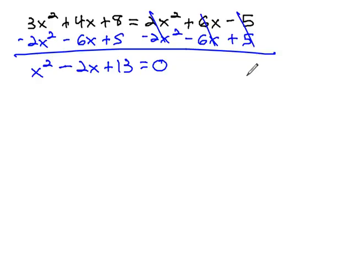Now that the equation equals 0, we're ready to use the quadratic formula that x is equal to the opposite of b, plus or minus the square root of b squared, minus 4ac, all over 2a.